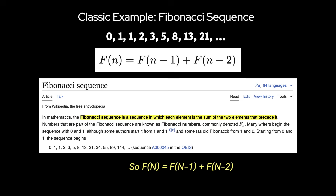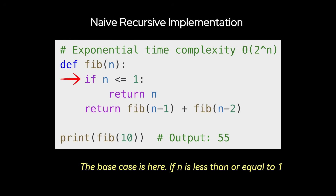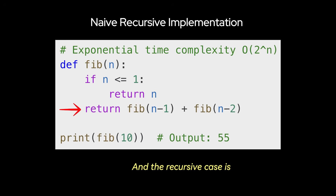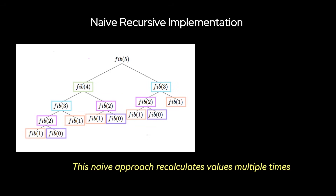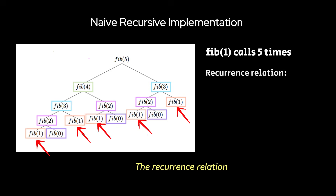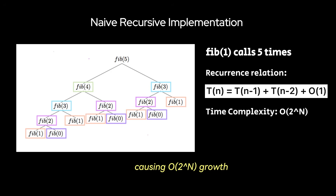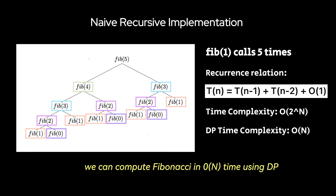The Fibonacci sequence is a series of numbers where each term is the sum of the two preceding terms, starting from 0 and 1. So F(n) = F(n-1) + F(n-2). This is what the vanilla recursive implementation looks like. The base case: if n is less than or equal to 1, return n. The recursive case returns Fib(n-1) + Fib(n-2). This naive approach recalculates values multiple times, leading to exponential time complexity. The recurrence relation expands to a binary tree of calls, causing O(2^n) growth. We'll see that we can compute Fibonacci in O(n) time using DP.